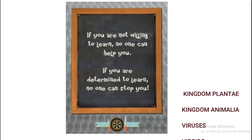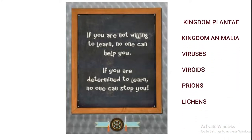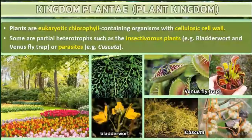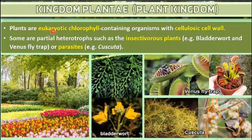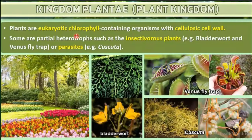In this session we are going to study about the general characteristics of Kingdom Plantae and Kingdom Animalia. Kingdom Plantae includes all eukaryotic, chlorophyll-containing organisms commonly called plants. You will study about the eukaryotic cell structure in chapter eight. They have a cellulosic cell wall — the cell wall is made up of cellulose.